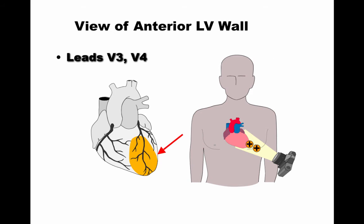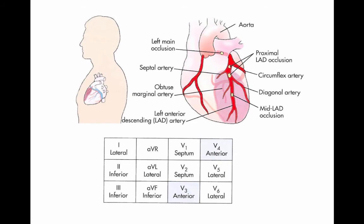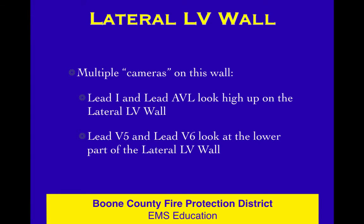Here's the camera looking at the anterior wall — some more good information about that, a different way to look at it. You ought to know the right coronary, the left main, the left anterior descending, and the circumflex. Those are the arteries you ought to know. The lateral left ventricular wall is under multiple camera surveillance: Lead 1 and AVL look high up on that wall, while V5 and V6 look at the lower part. That lateral wall is really well covered. What's lateral, septal, posterior, anterior, inferior — this really sticks in your brain and comes alive when we do the Play-Doh drill.